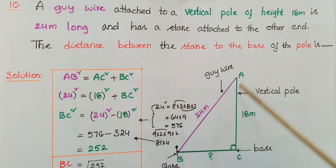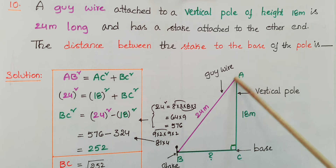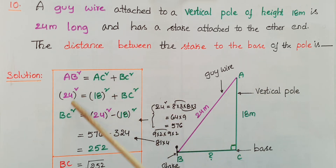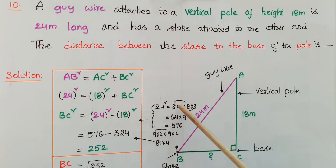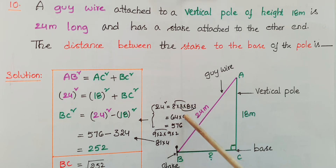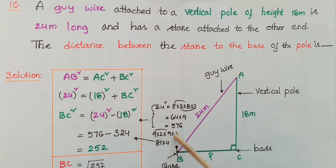In triangle ABC, the angle is 90 degrees. As per Pythagoras theorem: AB² = AC² + BC². Here AB is 24, so 24² = 18² + BC², giving BC² = 24² − 18². Now 24² = 576 (since 24 = 8×3, so 64×9 = 576), and 18² = 324 (since 9×2 = 18, 81×4 = 324). So BC² = 576 − 324 = 252.